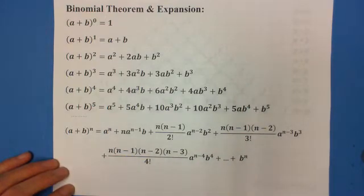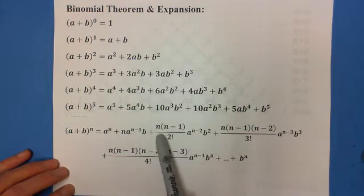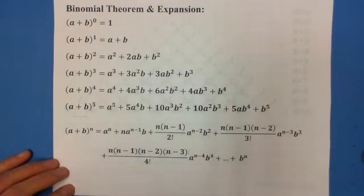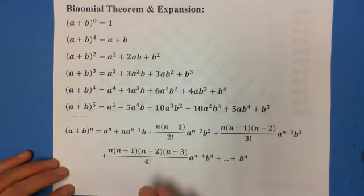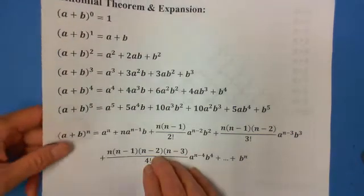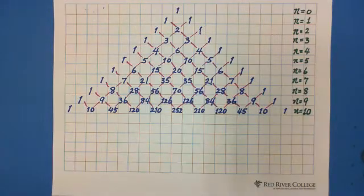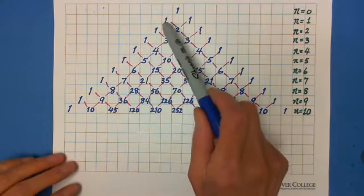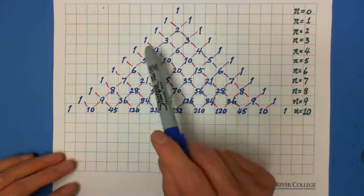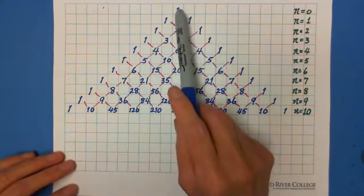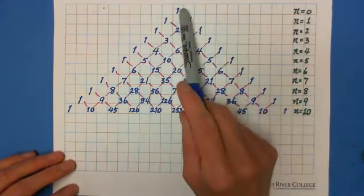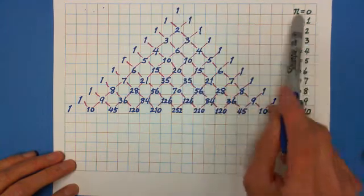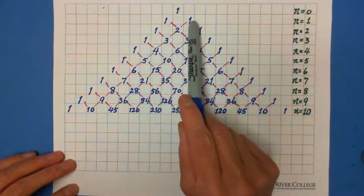But using Pascal's triangle, you don't need to do it that way. We just follow what the Pascal triangle shows us. So let me show you. This is the Pascal triangle — you can make it yourself very easily. When n equals 0, the row is just 1. When n equals 1, the row is 1 and 1, because a plus b.